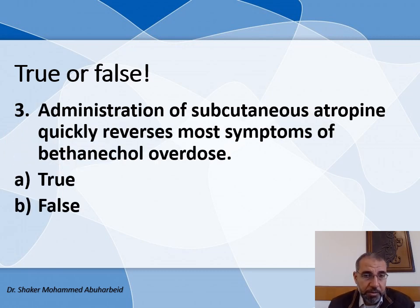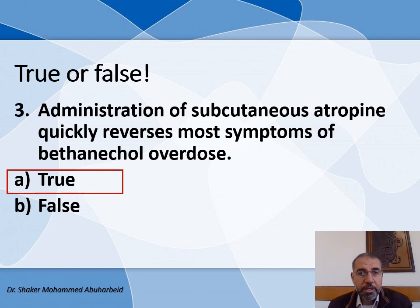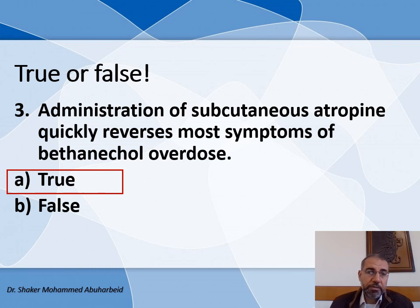Third true/false question: Administration of subcutaneous Atropine quickly relieves most symptoms of Bethanechol overdose — true or false? The answer is true. By overdose of Bethanechol, we will use Atropine subcutaneously, which is helpful in the treatment of Bethanechol overdose or toxicity.